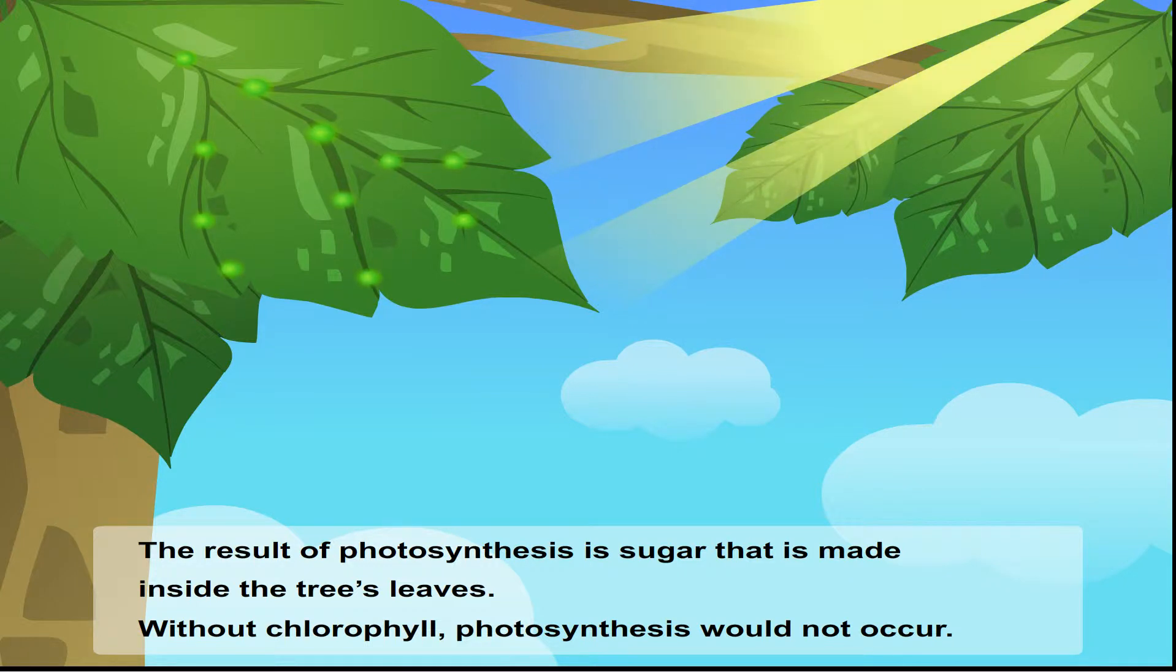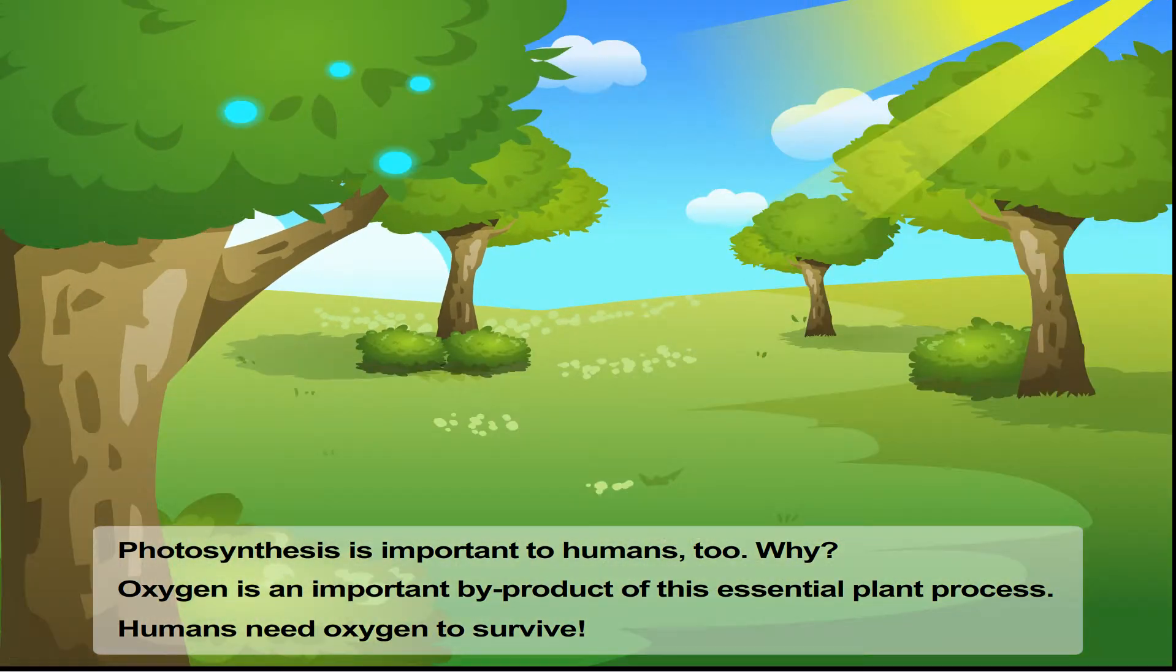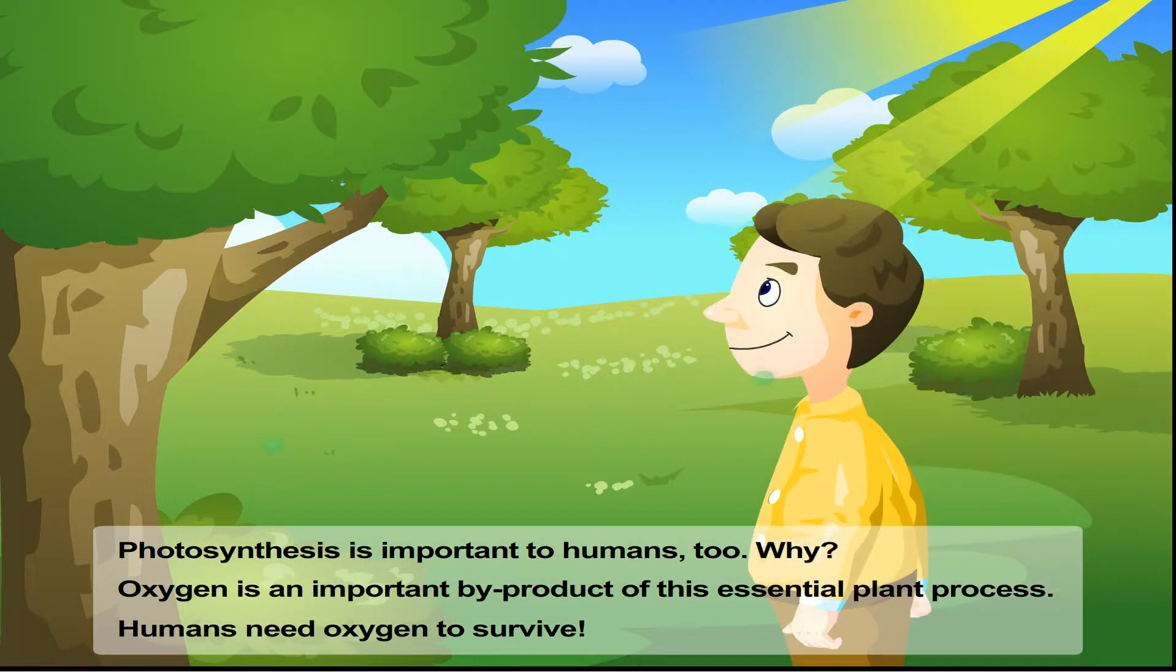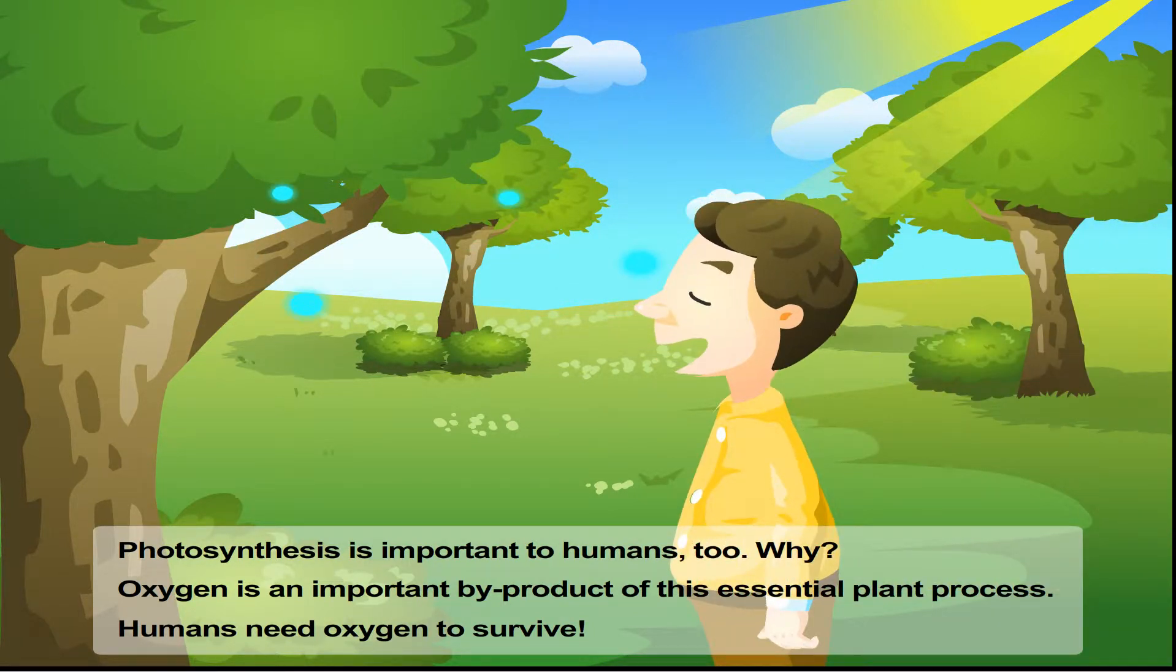Without chlorophyll, photosynthesis would not occur. Photosynthesis is important to humans too. Why? Oxygen is an important by-product of this essential plant process. Humans need oxygen to survive.